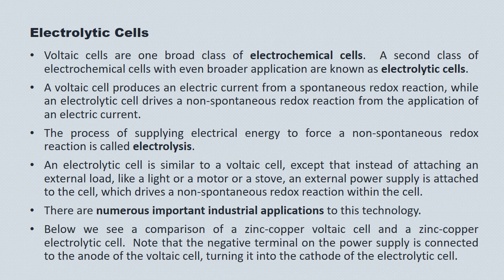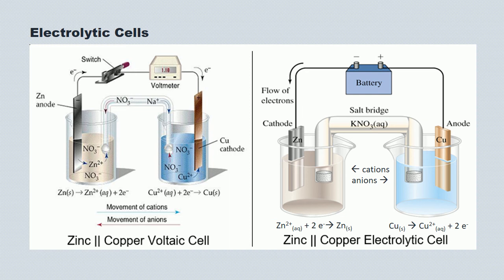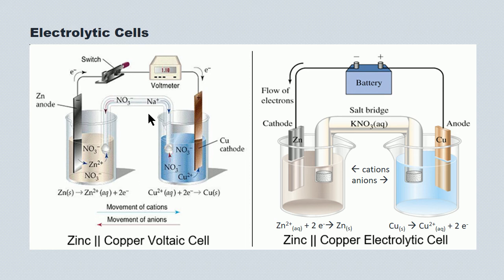On the next page, we're going to see a comparison between a zinc-copper voltaic cell and a zinc-copper electrolytic cell. Take particular note that the negative terminal on the power supply is connected to the anode of the voltaic cell, and that turns it into the cathode — the site of reduction in the electrolytic cell. Here's the comparison. On the left, we have the voltaic cell: the voltmeter is registering 1.10 volts, zinc is the anode being oxidized into zinc ions, and copper is the cathode with copper ions being reduced into copper atoms. Cations flow to the cathode, anions flow to the anode, and there's a salt bridge.